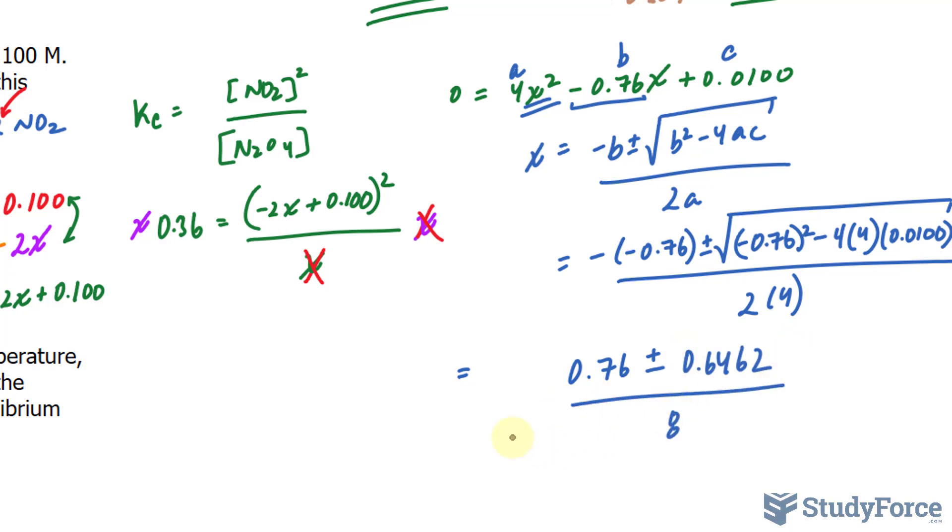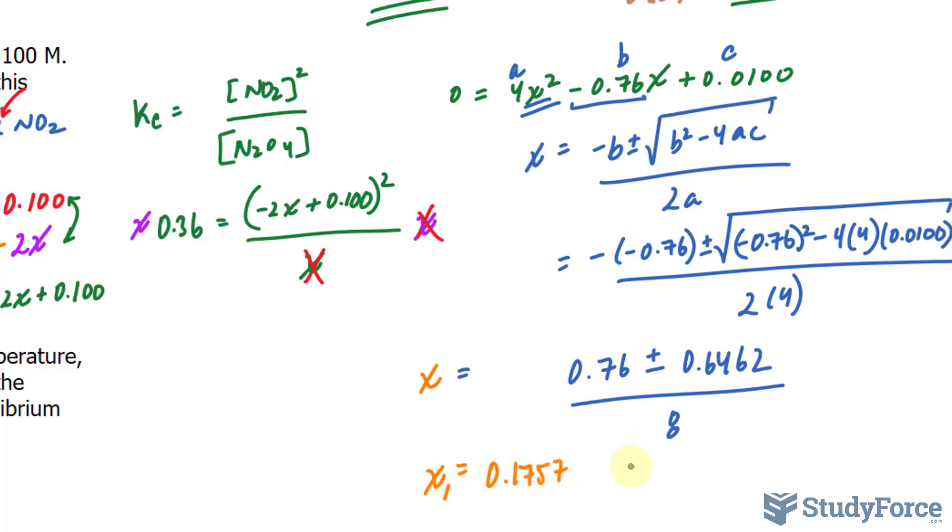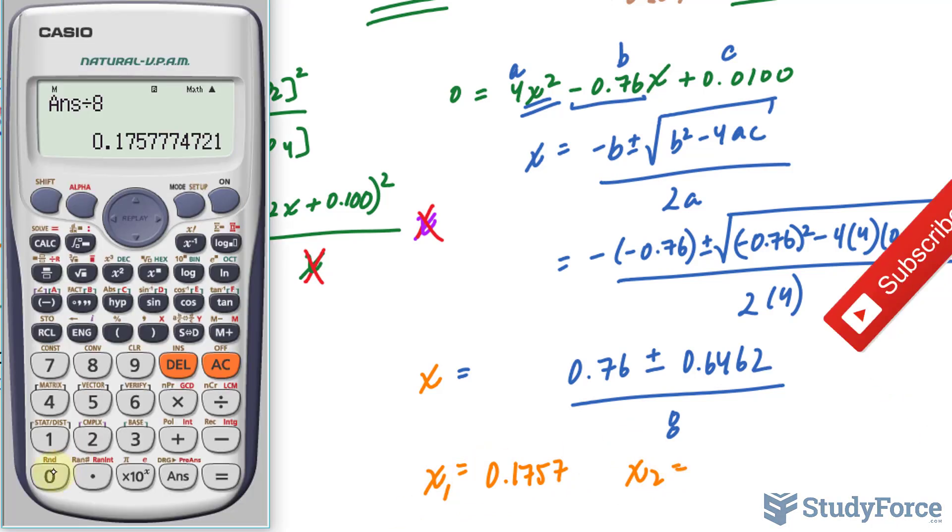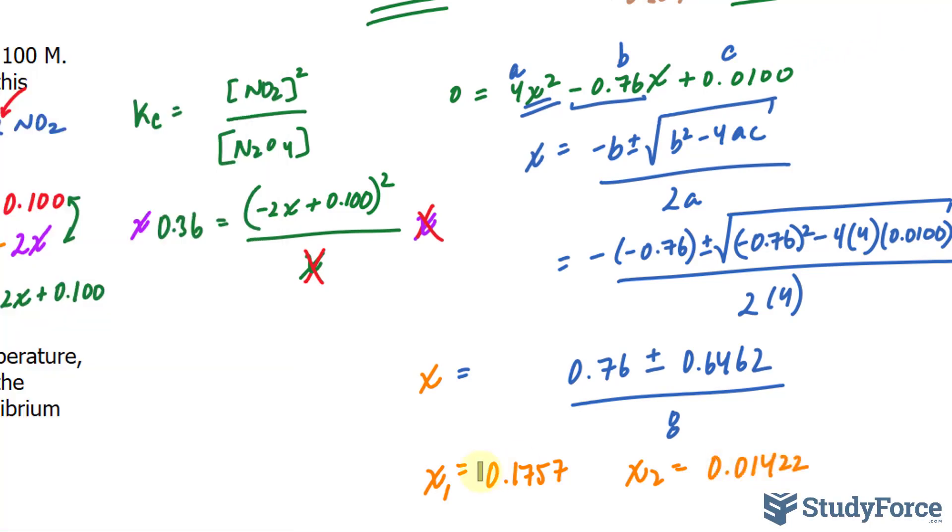This means we get two answers, two X values. And we have to determine which one is the correct one. Both of them are not correct. So 0.76 plus the answer that we just found divided by 8 gives us 0.1757. So that's one of our X's. Now our other X, again, minus 0.6462 divided by 8. And this time we get 0.014.